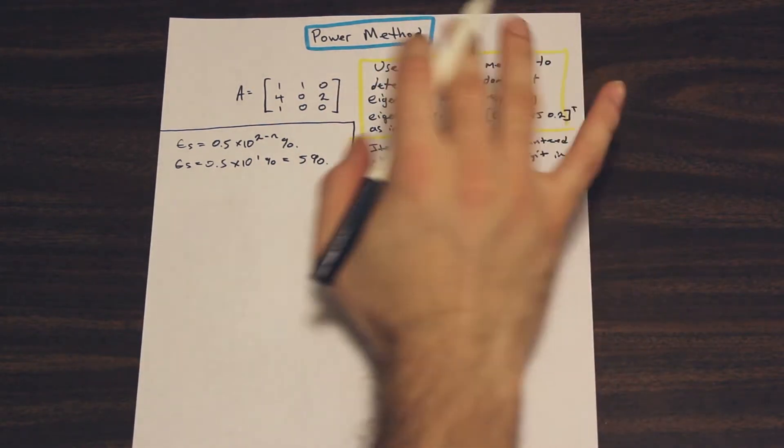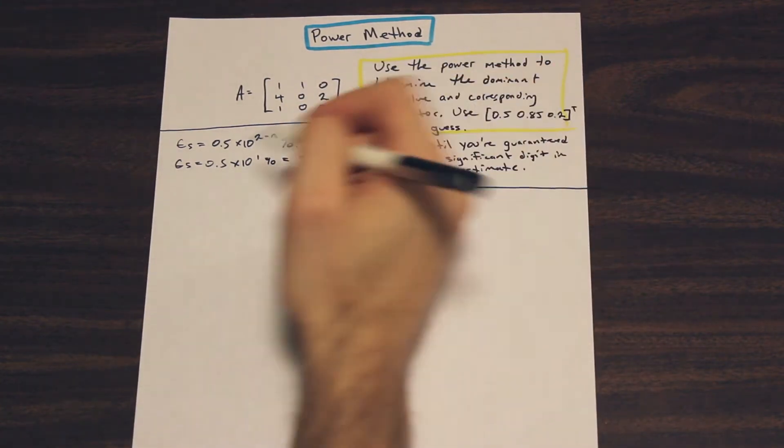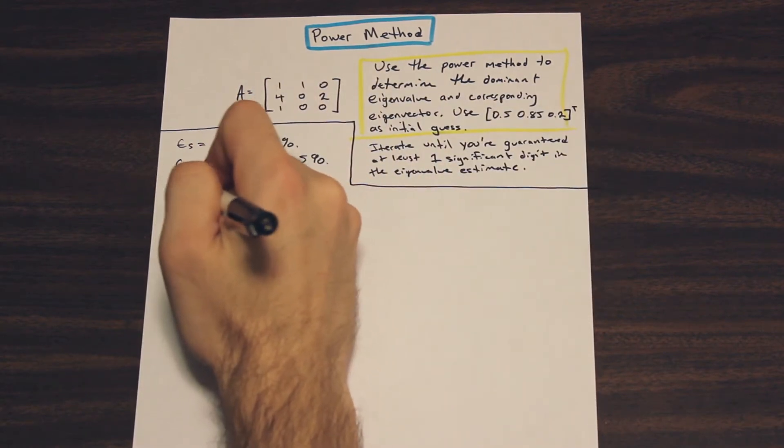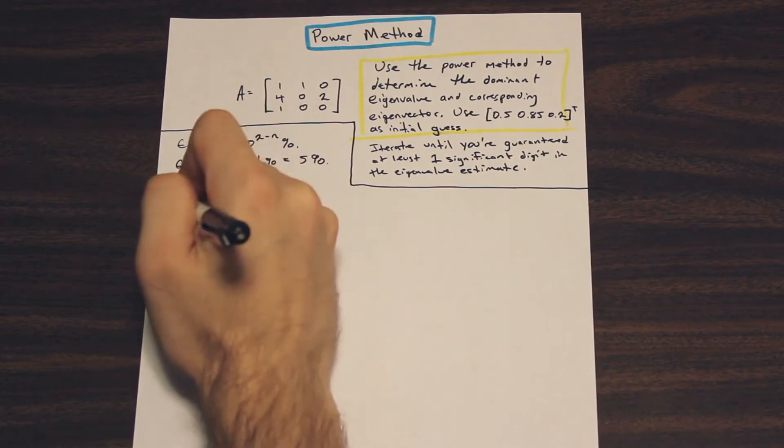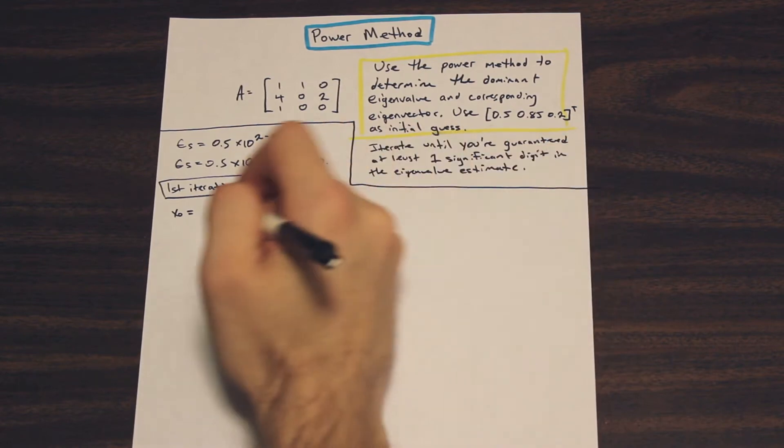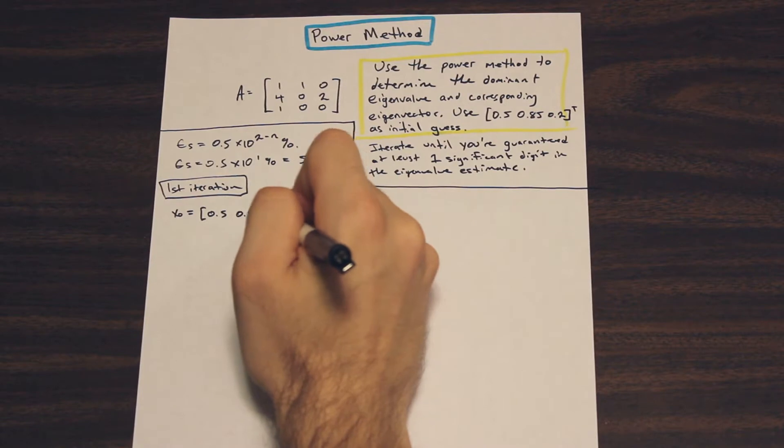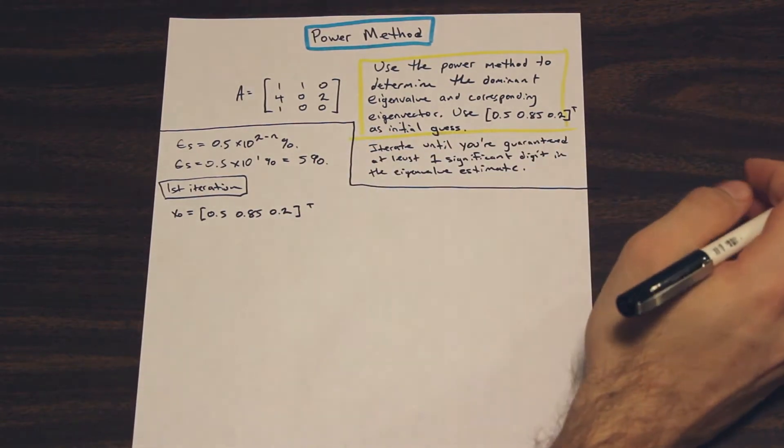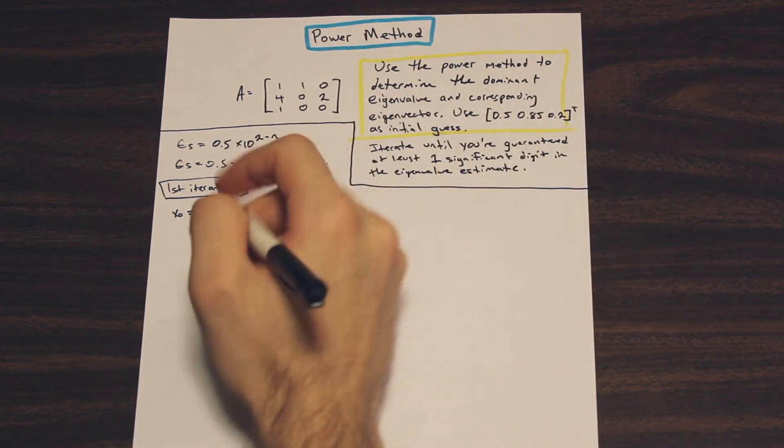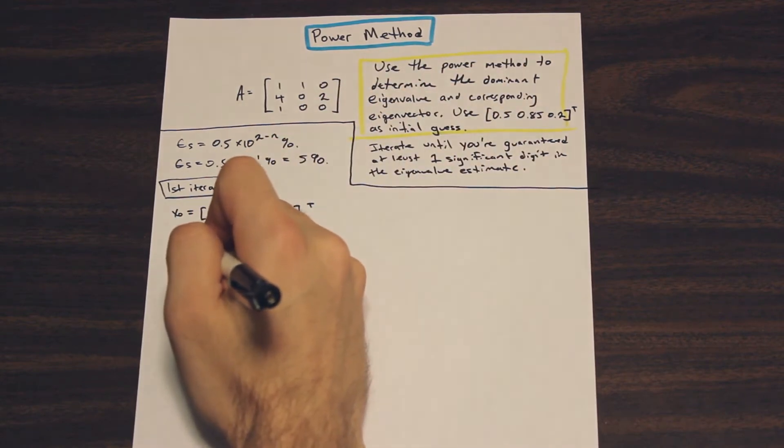So as long as epsilon a, the absolute relative error of our iterations is less than 5, we can stop, and we've satisfied the requirement. So let's go ahead and let's do our first iteration. This is really straightforward stuff. I'm not going to take too much time on this. I'll just show you how to do it. So x0, which is our initial guess, that's what we're given.